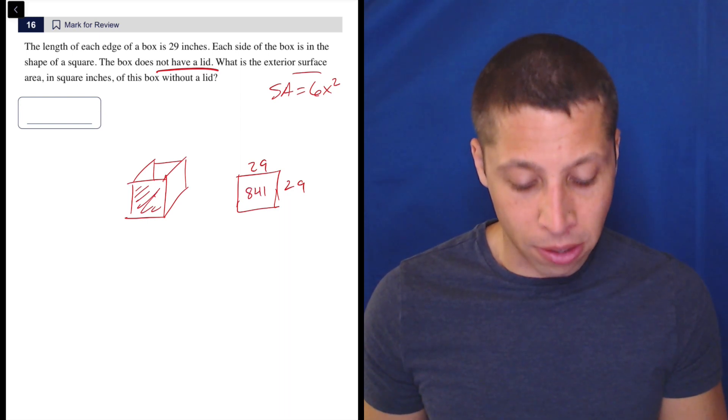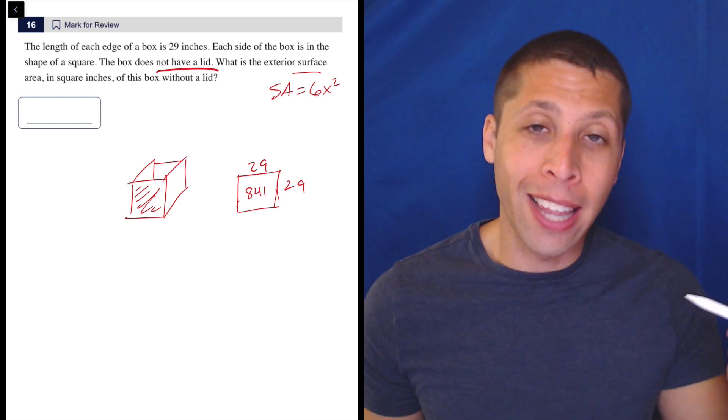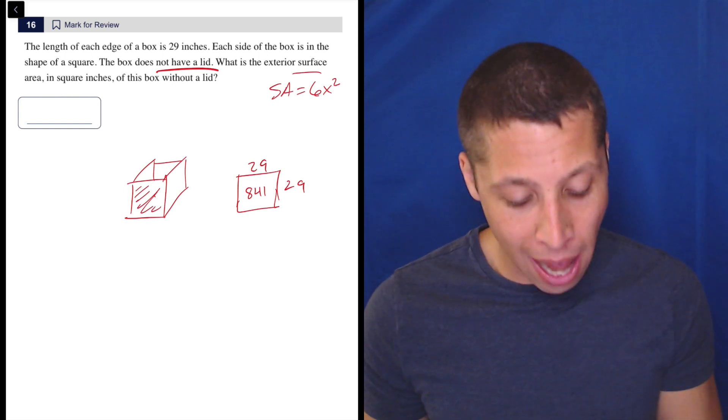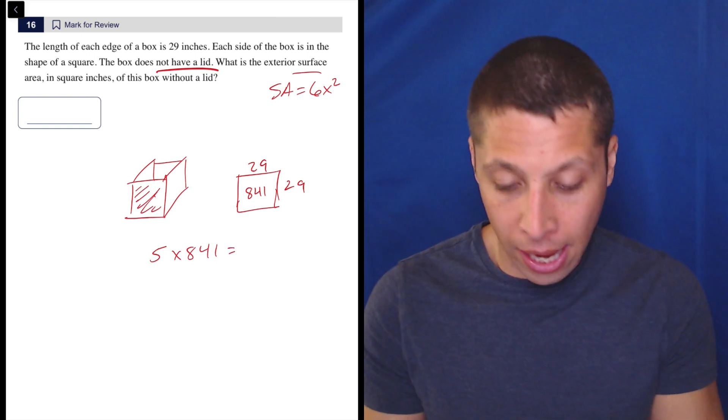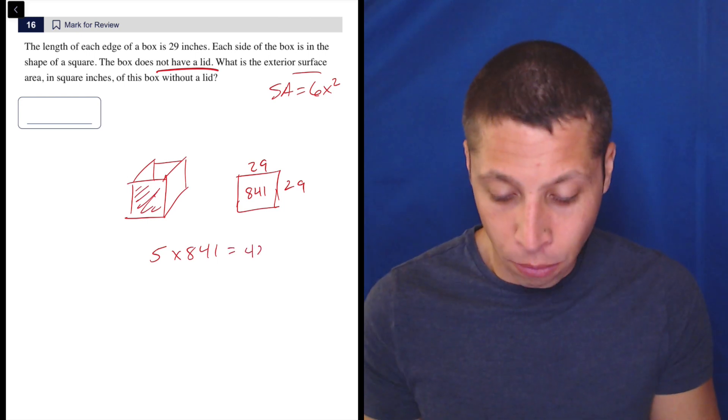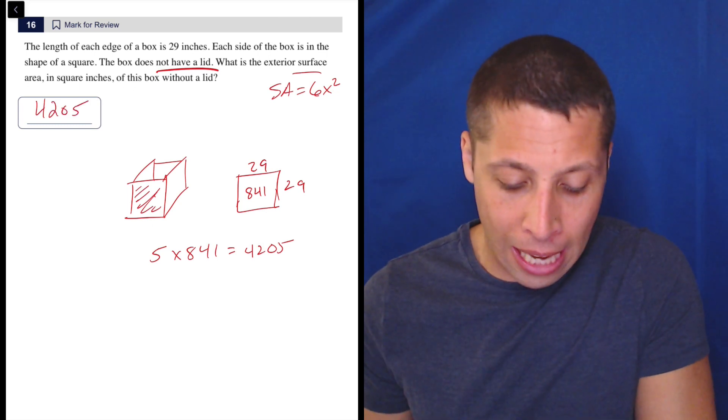And then there are five of these things, right? There's the front, there's the back, the left, the right, and the bottom, but no top. So it's just five times 841. And we could do that in the regular calculator, 4205 is my answer.